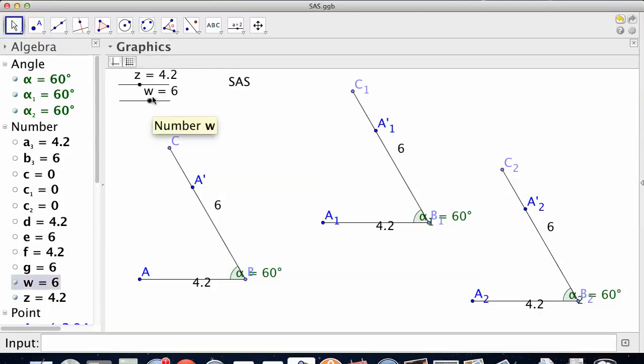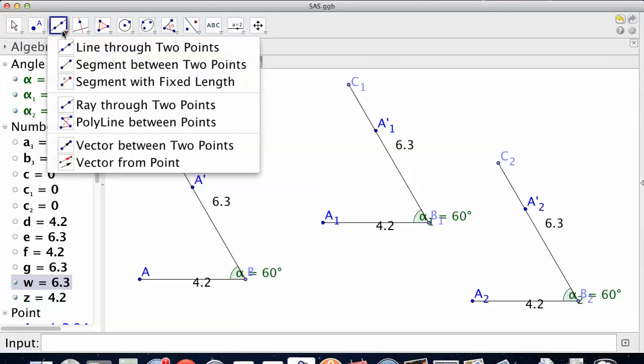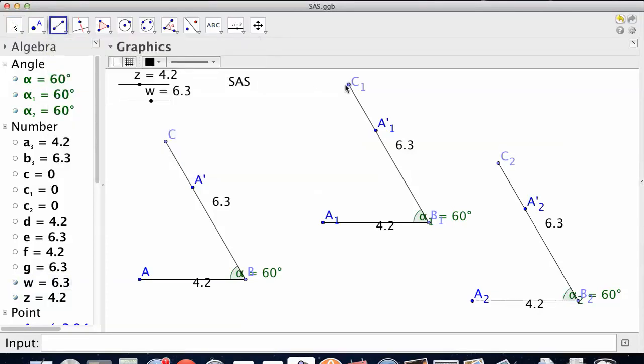And we can make as many sides as we want because they're all on a slider. Now, the question is, if I were now to complete the triangle, do I make the same exact triangle every time? We'll just grab a segment, and we will complete this triangle. And then we will complete this triangle. So they both have the same criteria.